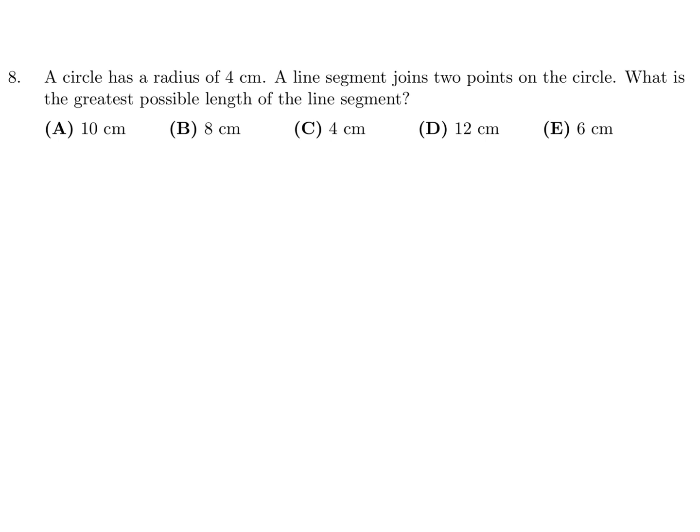A circle has a radius of 4 cm. A line segment joins two points on the circle. What is the greatest possible length of the line segment? Okay, so let's draw a circle here, and then this is the center, and this is the radius. And they're saying that's 4.